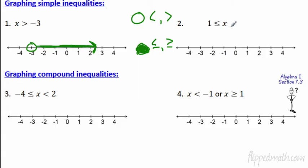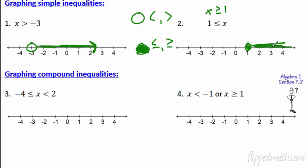Number 2: X is greater than or equal to 1. Closed circle at 1, arrow going right. If you want to rewrite it with X first and switch the sign — remember when solving inequalities you can switch the sign when you divide by negative 1 — the sign switches. Just graph it as X is greater than or equal to 1.